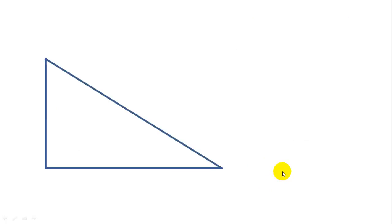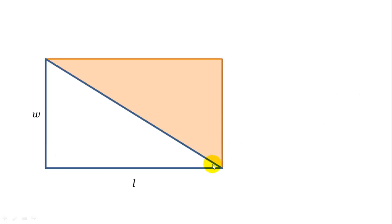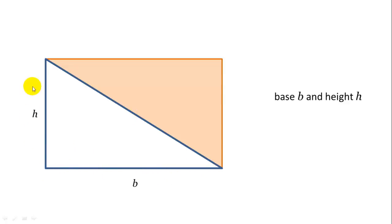Now if we want to find the area of a triangle, one way we can do it is to enclose the triangle within a rectangle. We know the area of the rectangle is L times W. If we bring our triangle back, we can see that the blue diagonal — the hypotenuse — bisects the rectangle, cutting it in half. So the area of the blue triangle is exactly half of the orange rectangle. We'll call this the base and this the height — the area of the triangle is base times height divided by 2, which is one half the area of the rectangle.